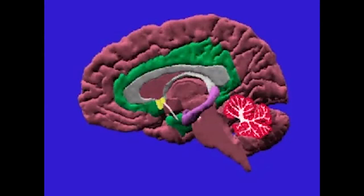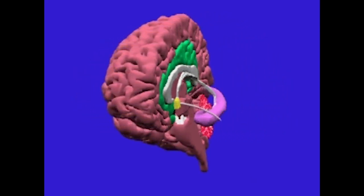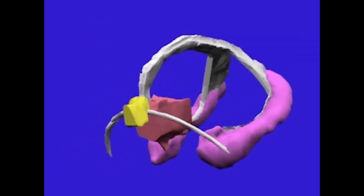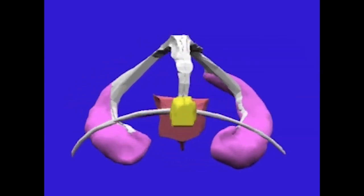This animation combines both the green cingulate gyrus and parahippocampal gyrus together with the hippocampus, making up the limbic lobe. The hippocampus is pulled out and you can see the fornix fibers coming from the hippocampus going down to the septal region and the hypothalamus as they loop over the anterior commissure. Here you can see them coming at you with the septal region in front of the anterior commissure and the brown hypothalamus behind it.